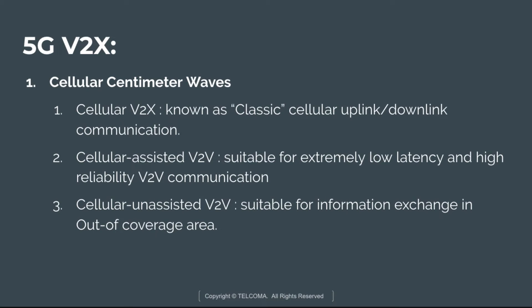Cellular-assisted vehicle-to-vehicle is suitable for extremely low latency and high reliability vehicle-to-vehicle communication. In this mode, a base station coordinates communication between vehicles by providing control information including link scheduling and resource allocation instructions. It also manages priority in cases where different vehicle-to-vehicle applications compete for resources.